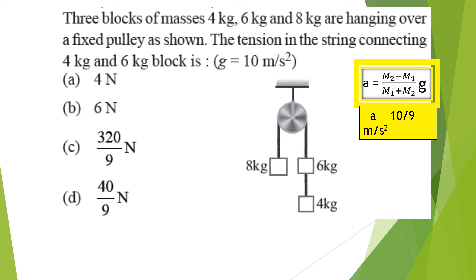Applying Newton's Second Law to the 4 kg body: forces acting are its weight (40 N downward) and tension T. So 40 − T = 4 × (10/9). Solving, the tension T = 320/9 Newtons. This is the answer.